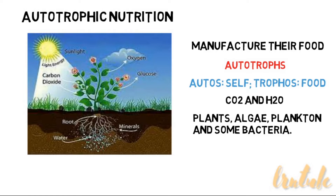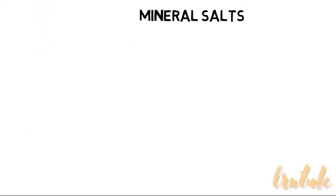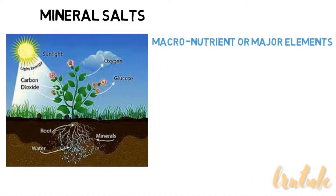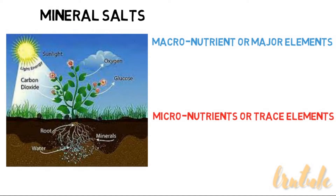Plant cells require mineral salts or elements. These mineral salts are obtained from the soil in the form of solutions so that plants can grow and develop properly. The soil is the main source of mineral salts, while gaseous elements like oxygen, hydrogen, and carbon are mainly derived from the atmosphere. Plant nutrients are grouped into two classes depending on the quantity required by the plants: macronutrients or major elements, and micronutrients or trace elements.